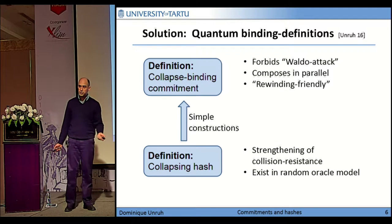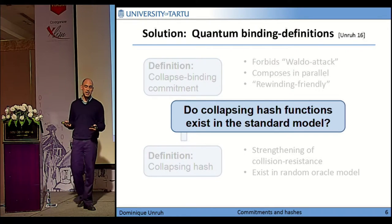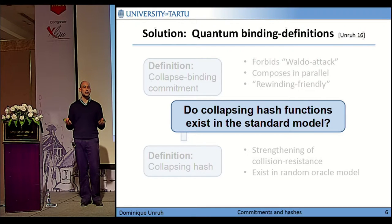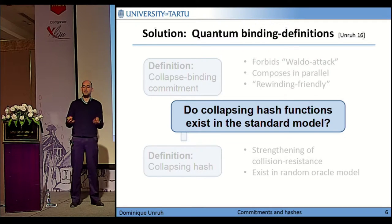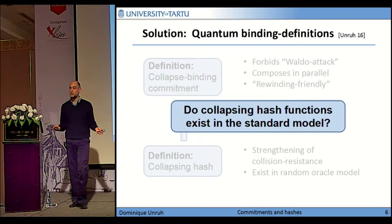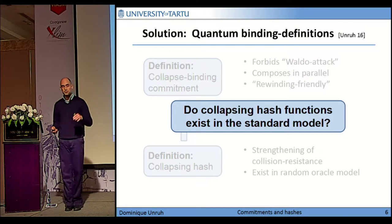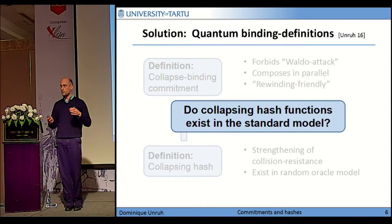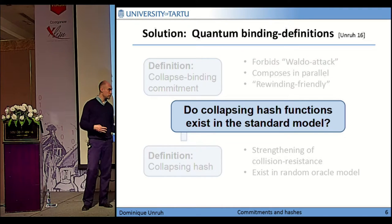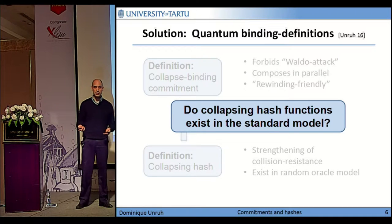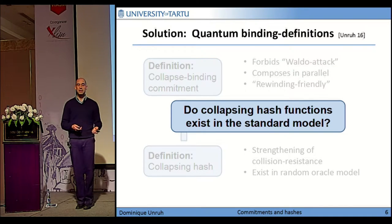But the big question is: do collapsing hash functions actually also exist in the standard model? Because you could claim: well, I make up some definition, and then I show the random oracle satisfies it, but perhaps it's impossible to achieve that definition. So the goal of the present paper is to show that collapsing hash functions exist in the standard model — without random oracle — and in particular, this then also implies the existence of collapsed binding commitments in the standard model. So it solves all the problems that I've mentioned so far.